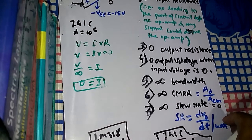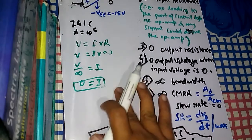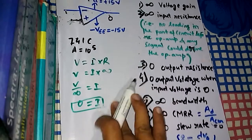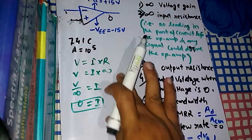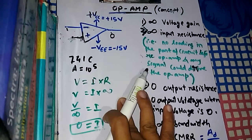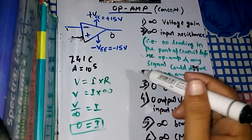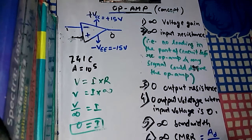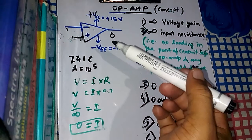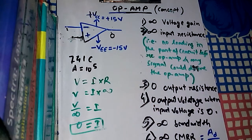So this was the discussion about the characteristics of the ideal operational amplifier and a little bit about non-ideal behavior. In the next video, we will see open loop circuits and feedback circuits, and we will also see the difference between them. Thank you.